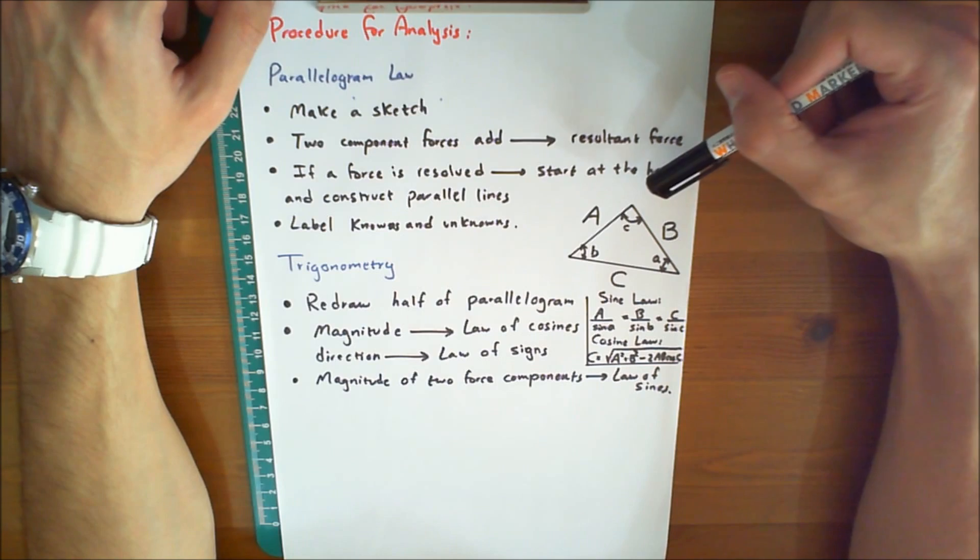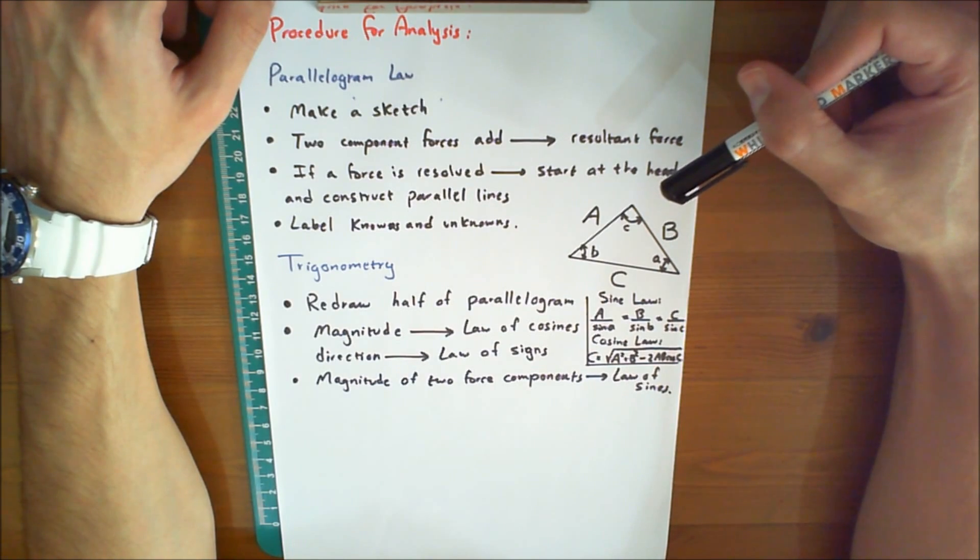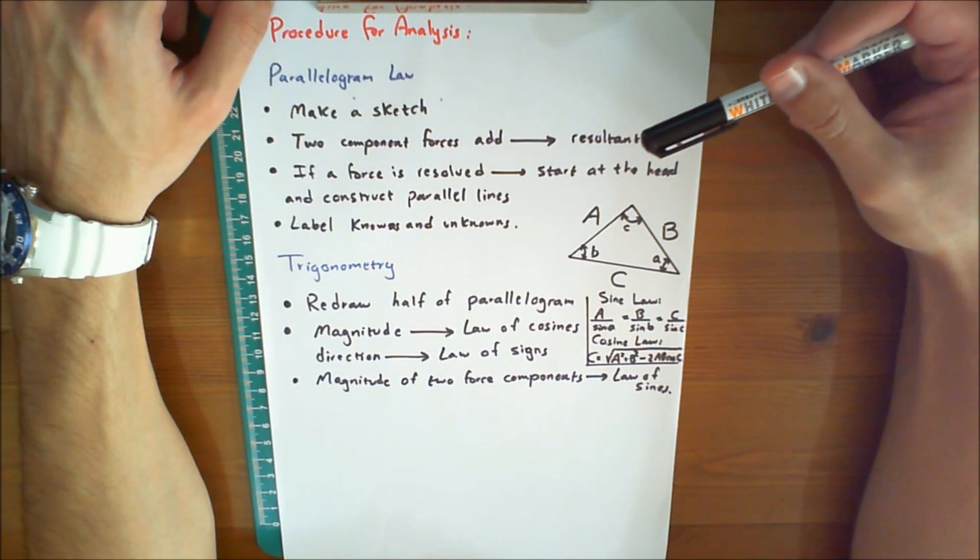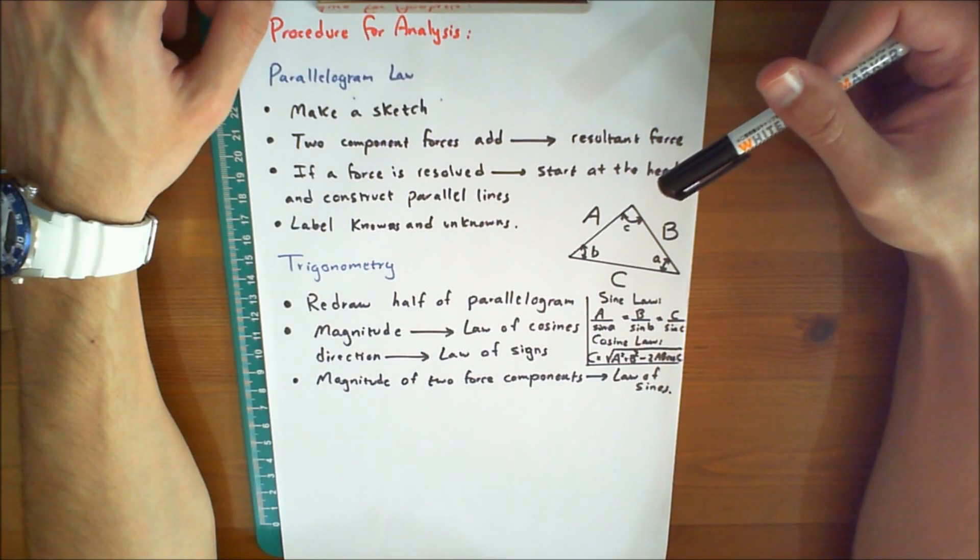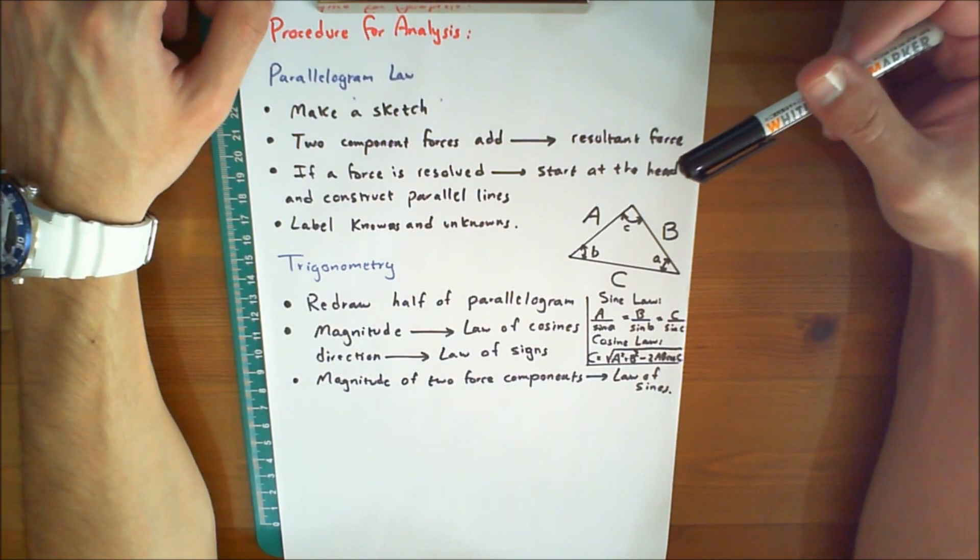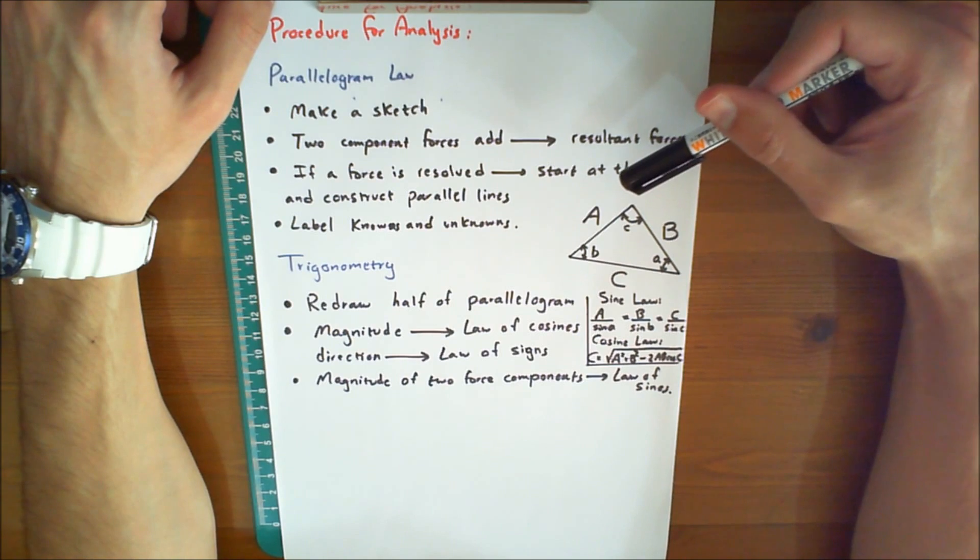If a force is to be resolved into components using the axes directed from the tail of the force, then start at the head of the force and construct lines parallel to the axes, thereby forming the parallelogram law. The sides of the parallelogram represent the components.